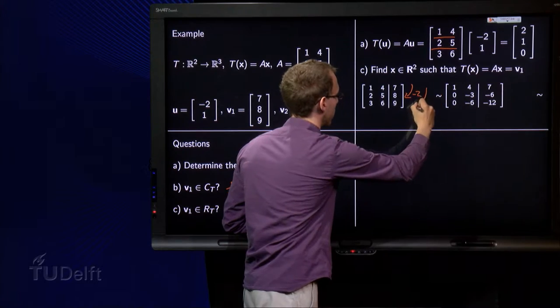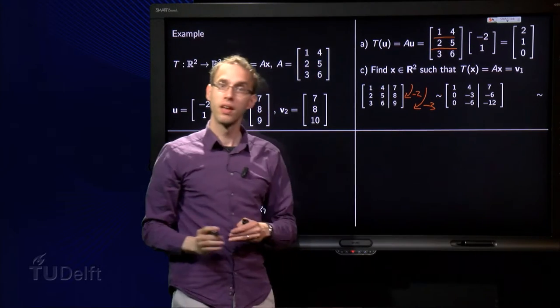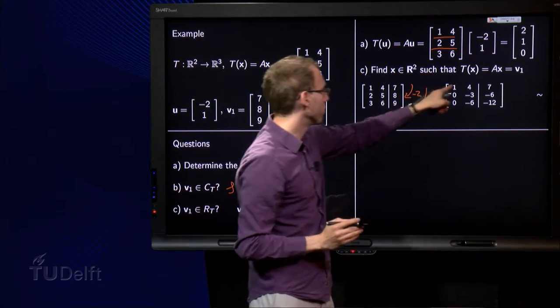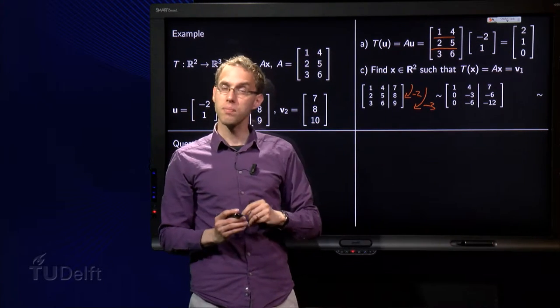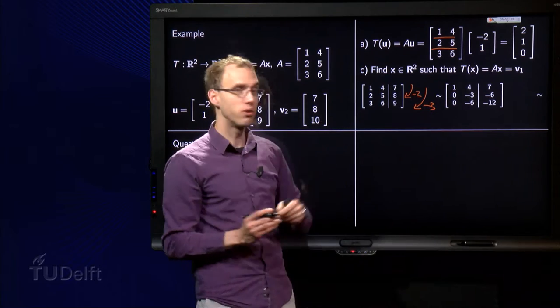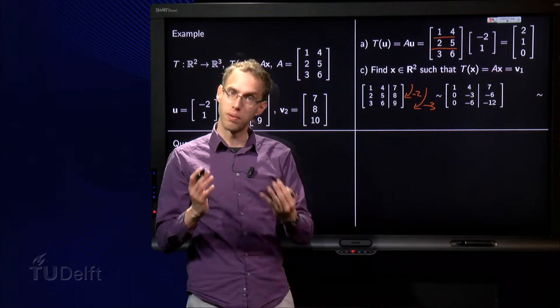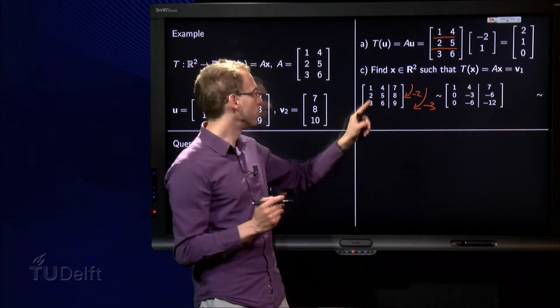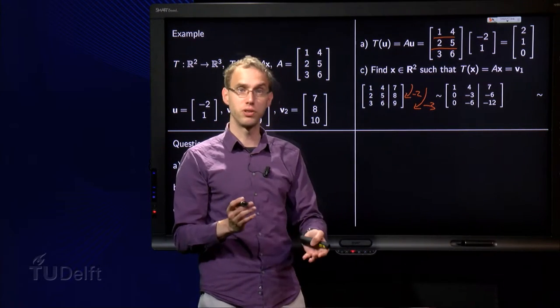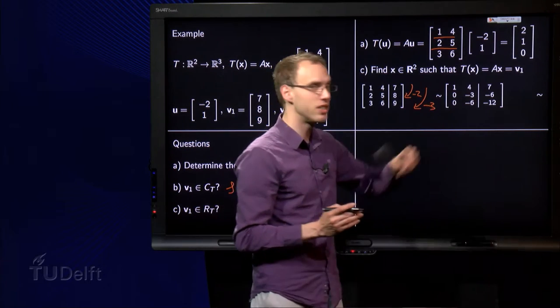We copy the first row: 1, 4, 7. Then -2 times 1 equals -2 plus 2 equals 0, -2 times 4 equals -8 plus 5 equals -3, -2 times 7 equals -14 plus 8 equals -6.